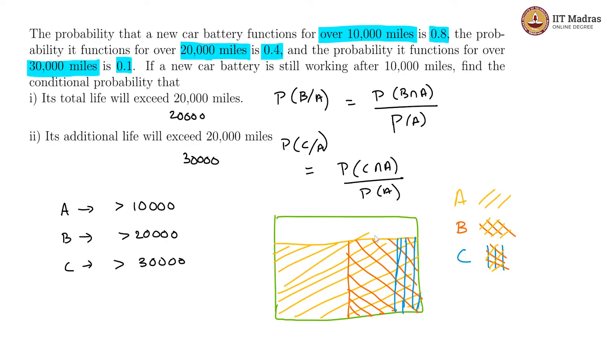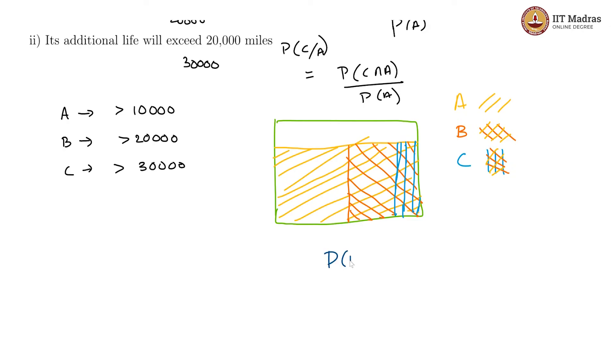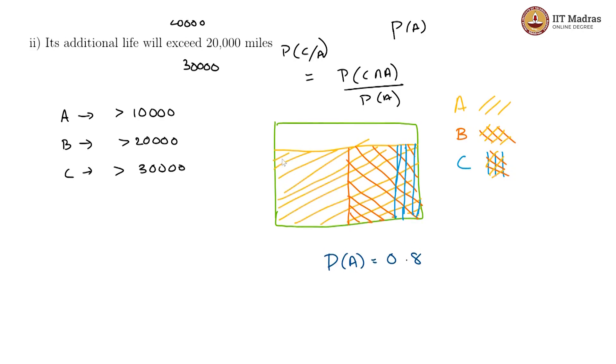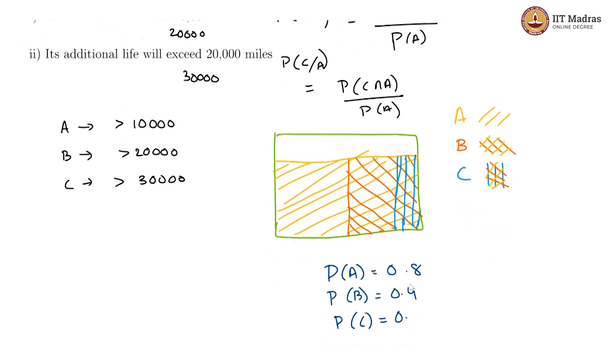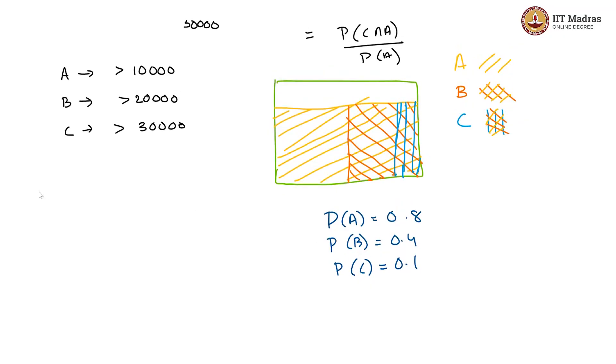Now looking at this case, we know P(A) is 0.8 and P(B) is 0.4 and P(C) is 0.1. This is what is given to us.